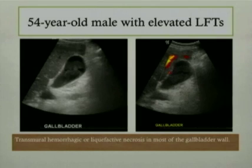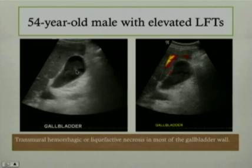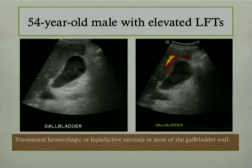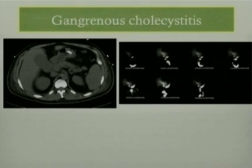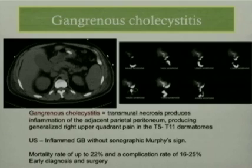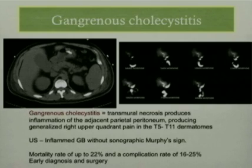Moving on to the next case — a 54-year-old male who presented with elevated liver function tests. The two gallbladder images demonstrate an avascular area within the gallbladder lumen that some may call sludge, but the gallbladder wall is not well defined, and the sludge does not layer dependently. This actually was transmural hemorrhagic necrosis involving the gallbladder wall, diagnosed as gangrenous cholecystitis and proven surgically. Gangrenous cholecystitis involves transmural necrosis producing inflammation of the adjacent parietal peritoneum and generalized right upper quadrant pain. Ultrasound demonstrates findings of an inflamed gallbladder but without sonographic Murphy's sign.